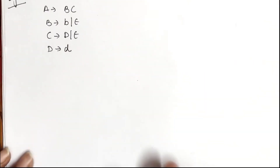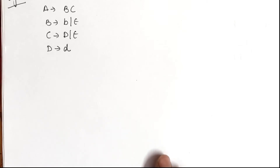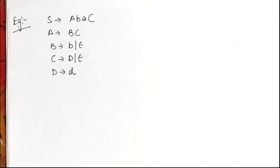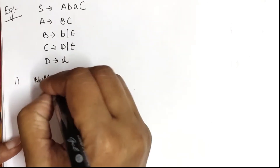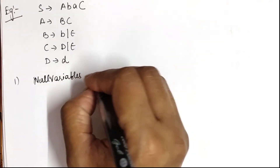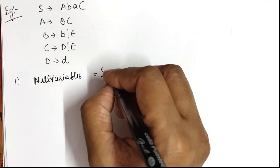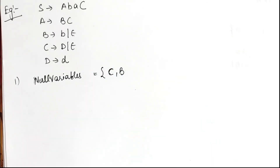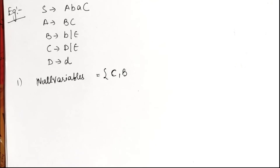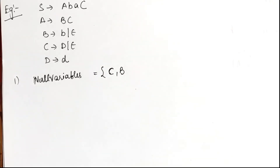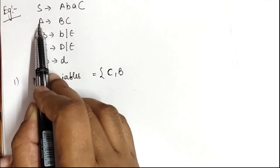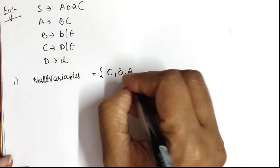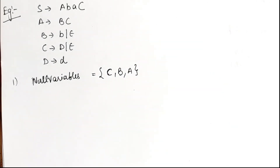The next example: S derives A B A C, A derives B C, B derives B or epsilon, C derives D or epsilon, D derives D. Here the nullable variables are B derives epsilon and C derives epsilon, so B and C directly generate epsilon productions. Checking indirect productions: for A derives B C, if we substitute B or C as epsilon then A can also derive epsilon. So A is also a nullable variable. For this grammar the nullable variables are A, B, and C.